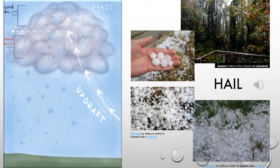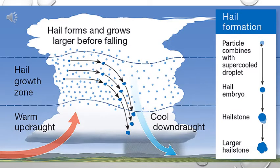Here's another model of how hail forms. As you can see, the warm updraft, the red arrow, brings water droplets into the hail growth zone, the freezing part of the cloud. In the hail growth zone, the water particles freeze and collide with other water droplets, or they grow bigger and bigger until they're too heavy to stay in the cloud. When that happens, the hail falls to the ground. Hail can become very large, even some as large as basketballs.